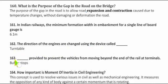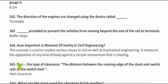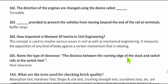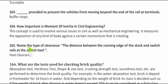Question 162: The device used to change the direction of an engine is called a turntable. Question 163: The device provided to prevent a vehicle from moving beyond the end of the rail at a terminal is called a buffer stopper. Question 164: How important is the moment of inertia in civil engineering? This concept is used to resolve various issues in civil and mechanical engineering; it measures the opposition of any body against a rotating moment.